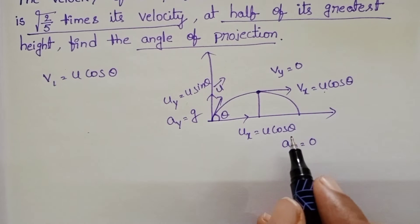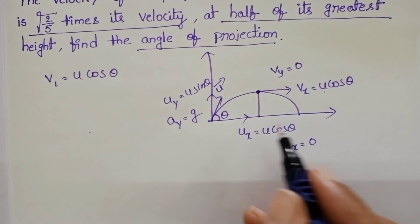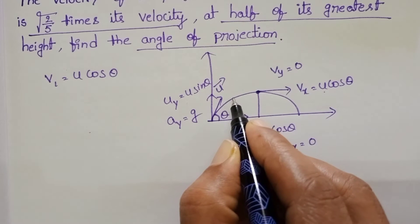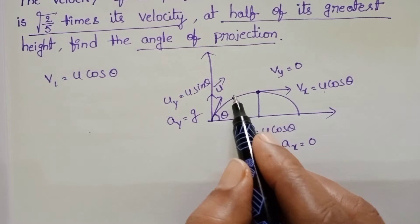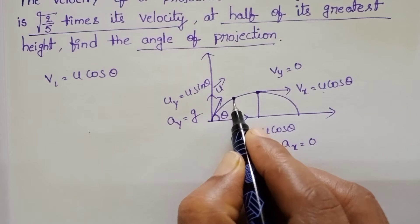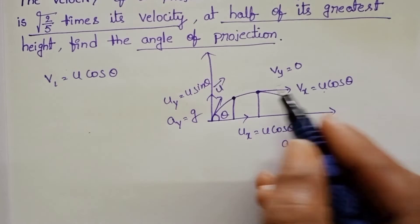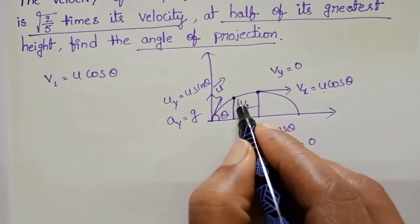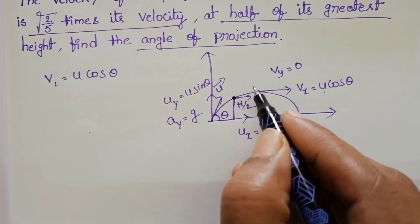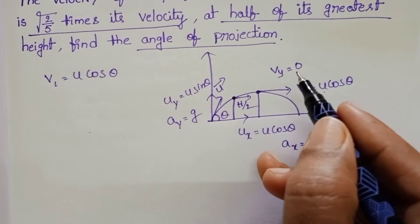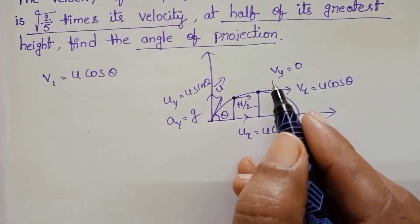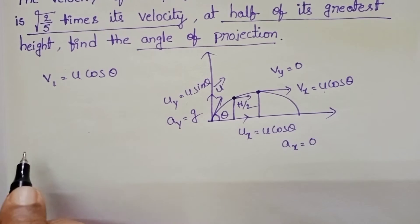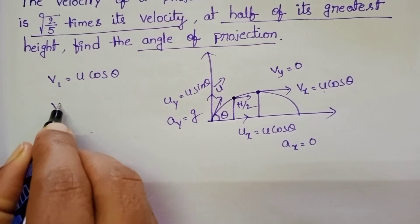Next, we want the velocity at half of the maximum height. Consider a point where the vertical height is half of the maximum height. At this point, the horizontal component remains the same, but the vertical component changes. We find it using the equation of motion.